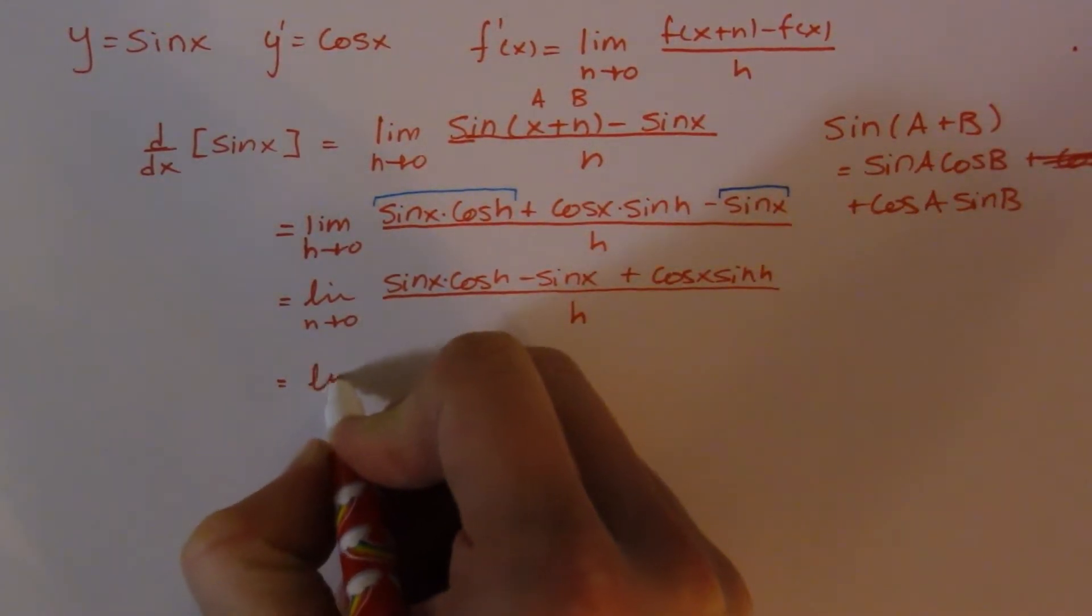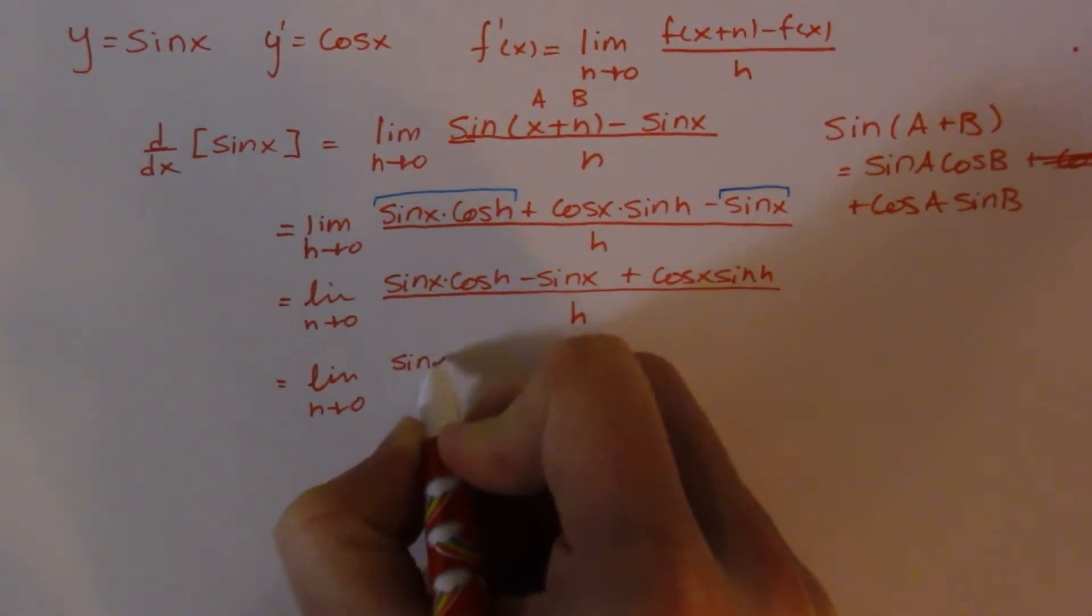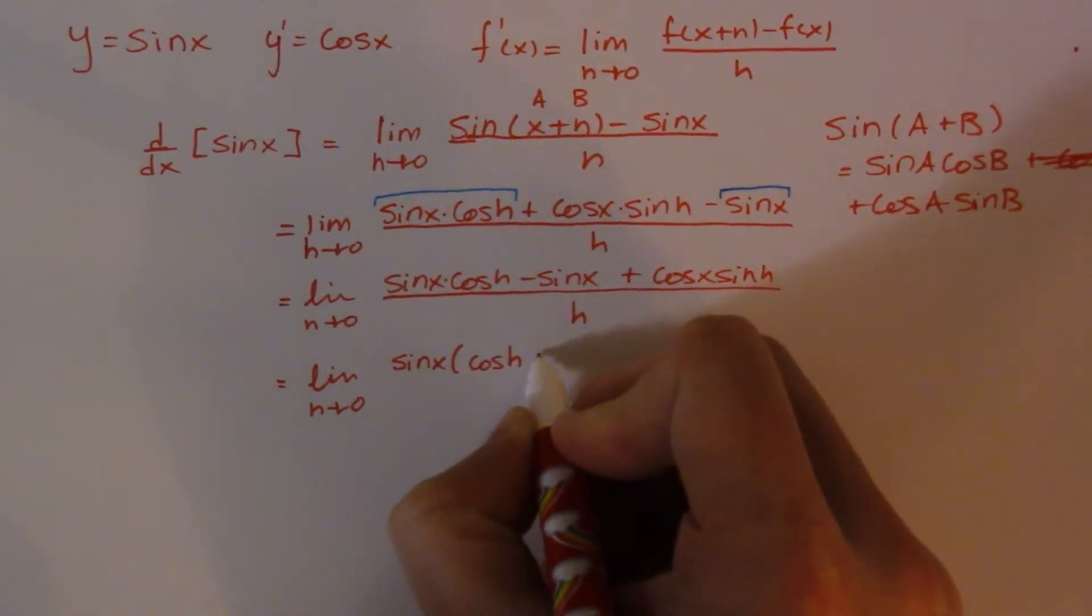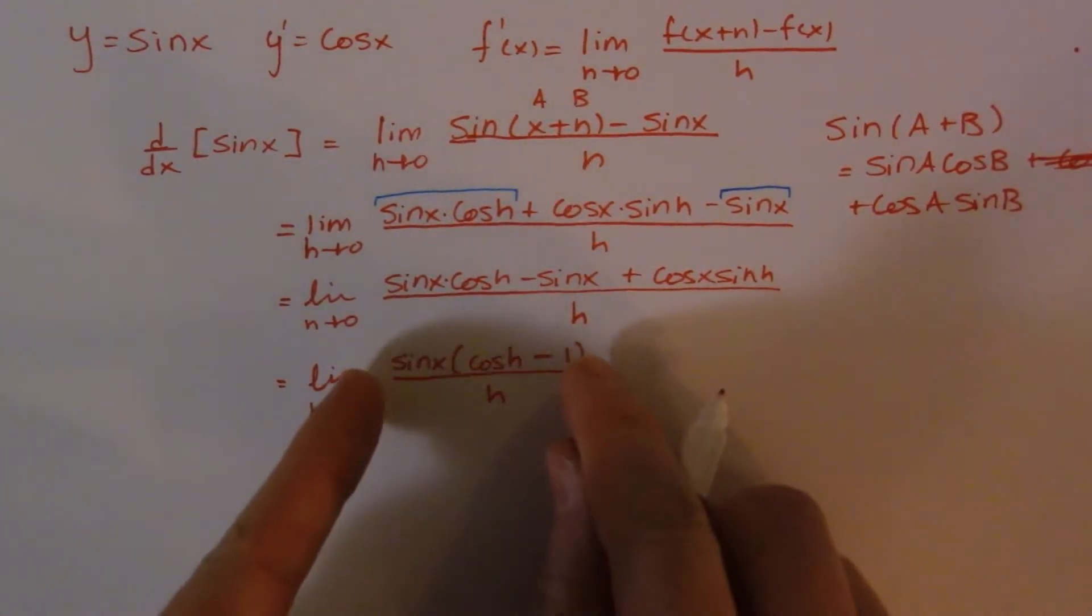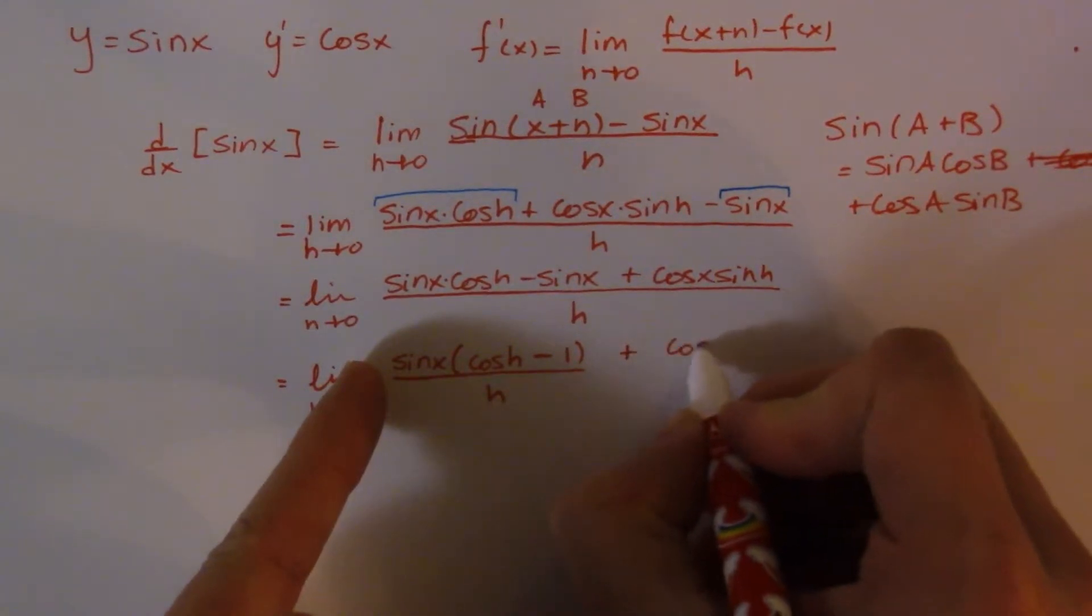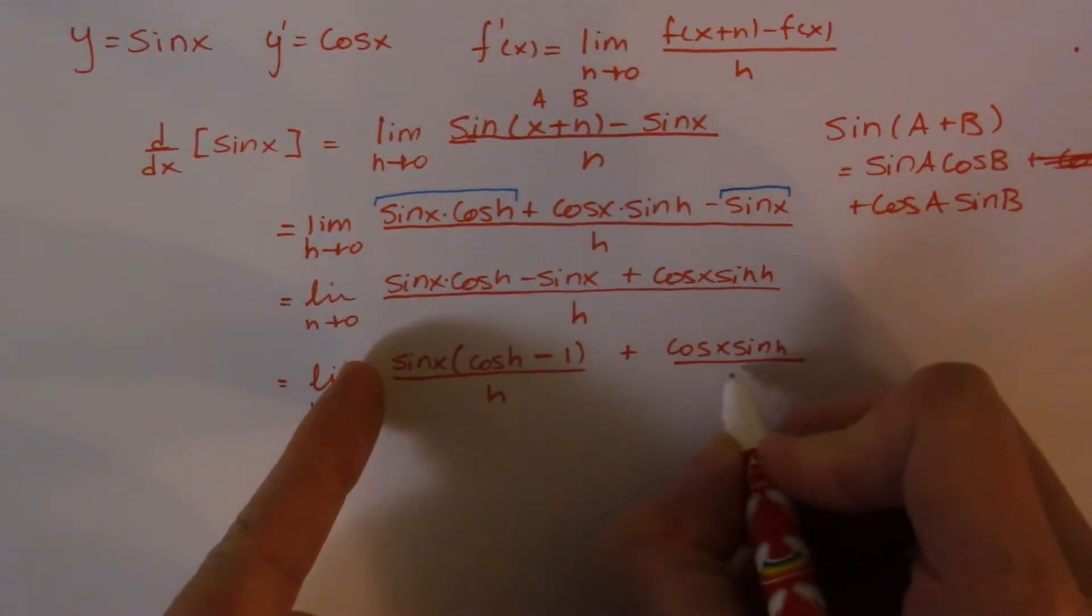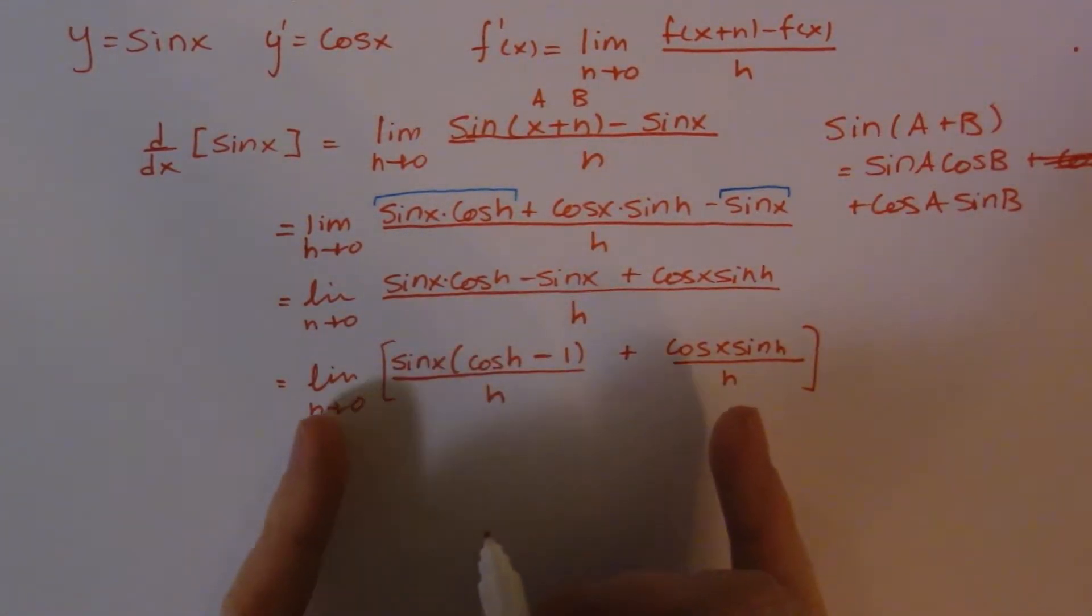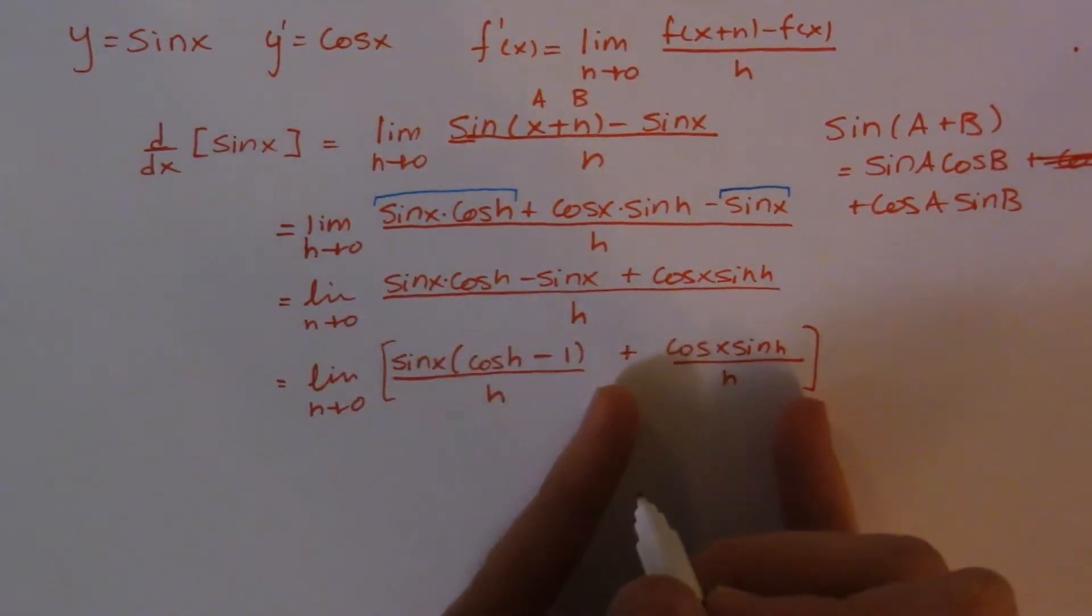I'm going to have the limit as h goes to 0, and I'm going to write this as sine, and I'm going to take out that sine, and I'm left with inside the brackets cos of h minus 1 all over h. I'm going to call that one fraction right there, and this guy does not change, and I'm just going to keep it all over that. I'm going to put brackets around this, because that limit applies to both of these things. That's essentially what my next step is going to be, is putting the limit on both of these guys, and I'm going to rewrite this one and this one a little bit.